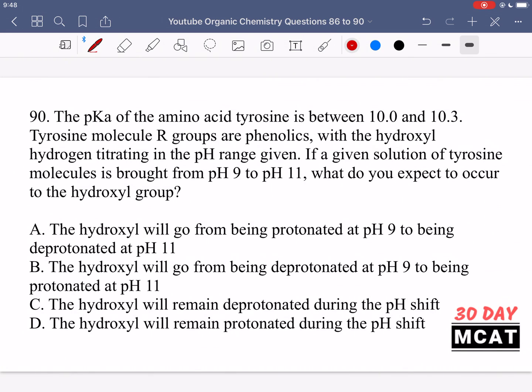In question 90, the pKa of the amino acid tyrosine is between 10 and 10.3. Tyrosine molecule R groups are phenolics with the hydroxyl hydrogen titrating in the pH range given. If a given solution of tyrosine molecules is brought from pH 9 to pH 11, what do you expect to occur to the hydroxyl group? So the pKa of tyrosine is around 10-ish and then we raise the pH from 9 to 11. And what you should know about the pKa is that if your pH of the solution is at the pKa of some group, then you have a 50-50 mixture of the protonated form and the deprotonated form.